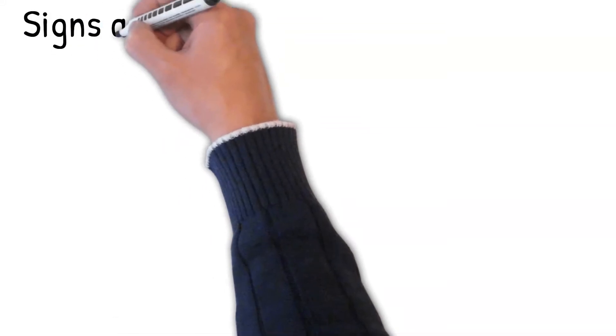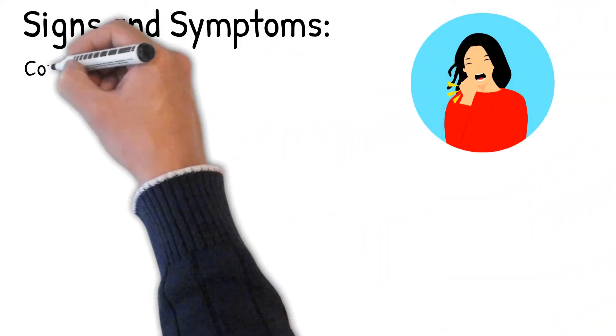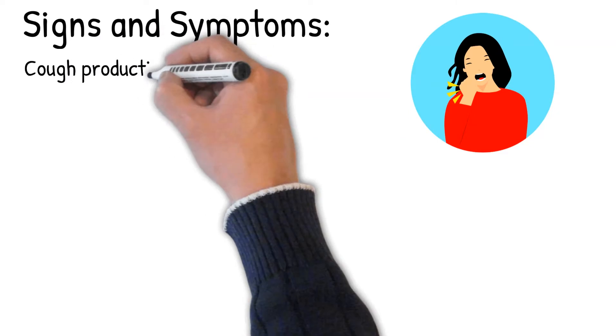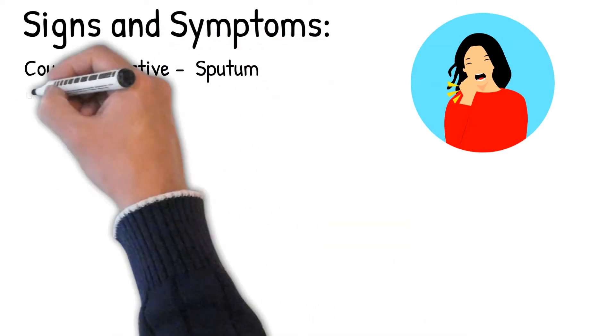Signs and symptoms: Clinical findings include cough productive with thick sputum, with frequent green or yellow sputum lasting months to years.